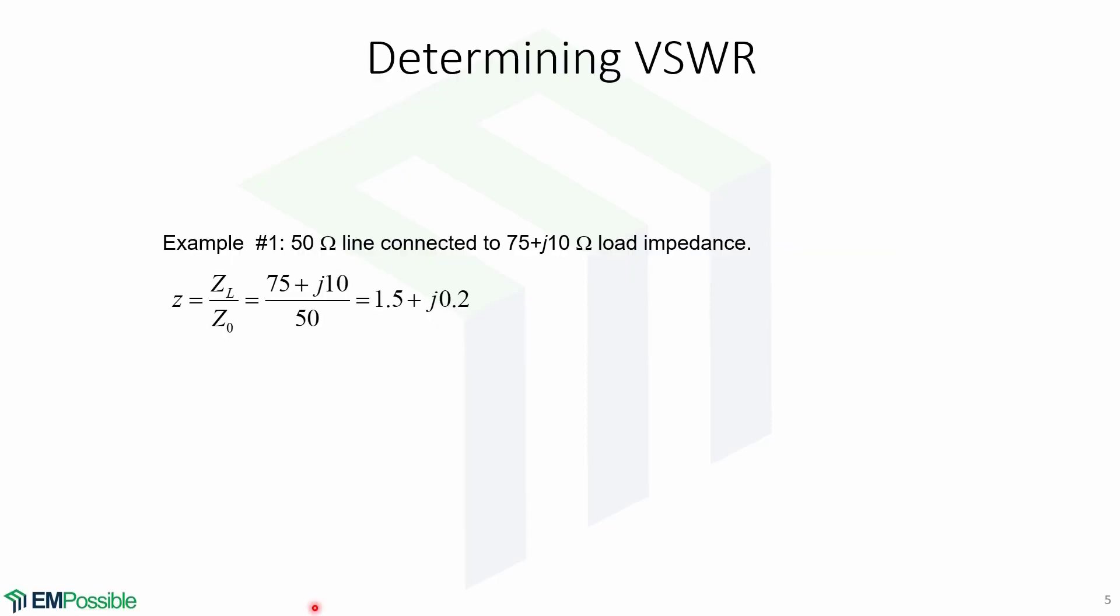Now we will learn how to determine the VSWR. In this example, a 50 ohm line is connected to a 75 plus j10 ohm load impedance. Normalizing the load impedance gives us this.